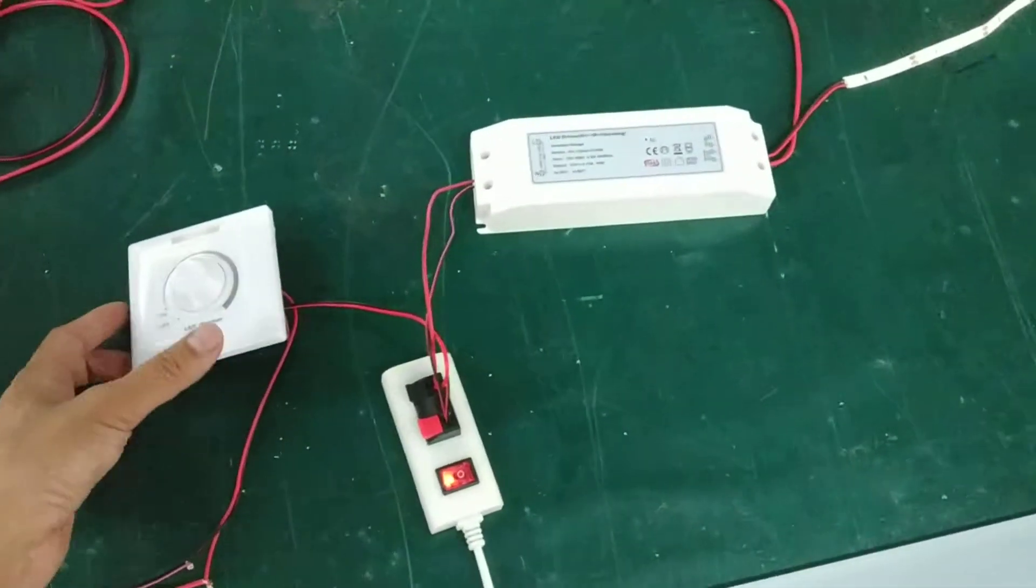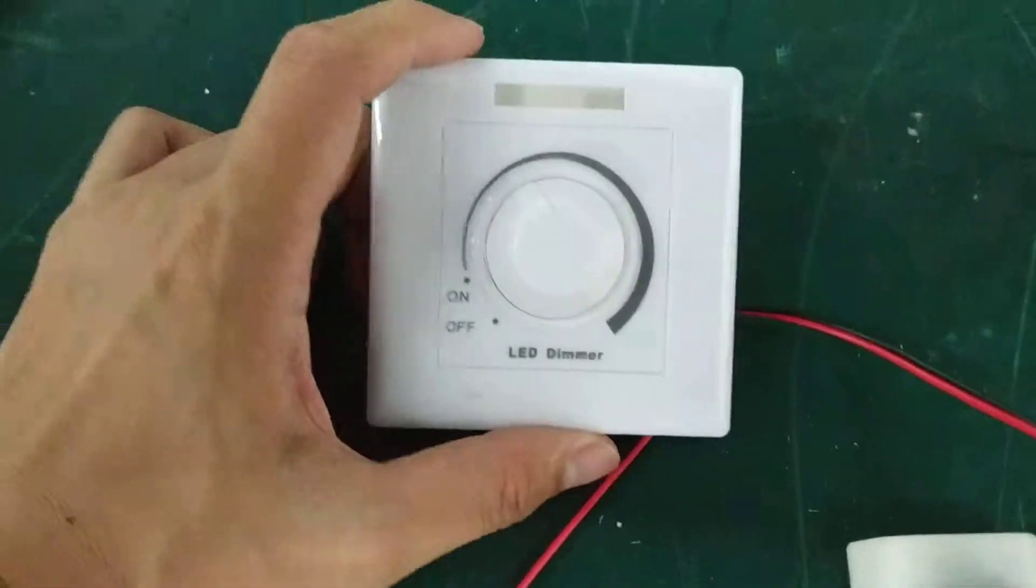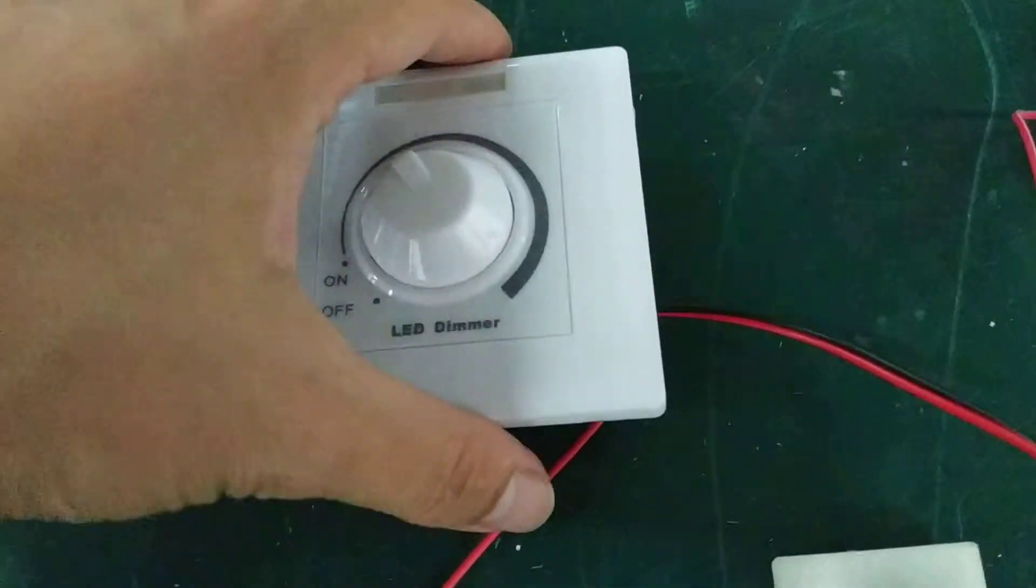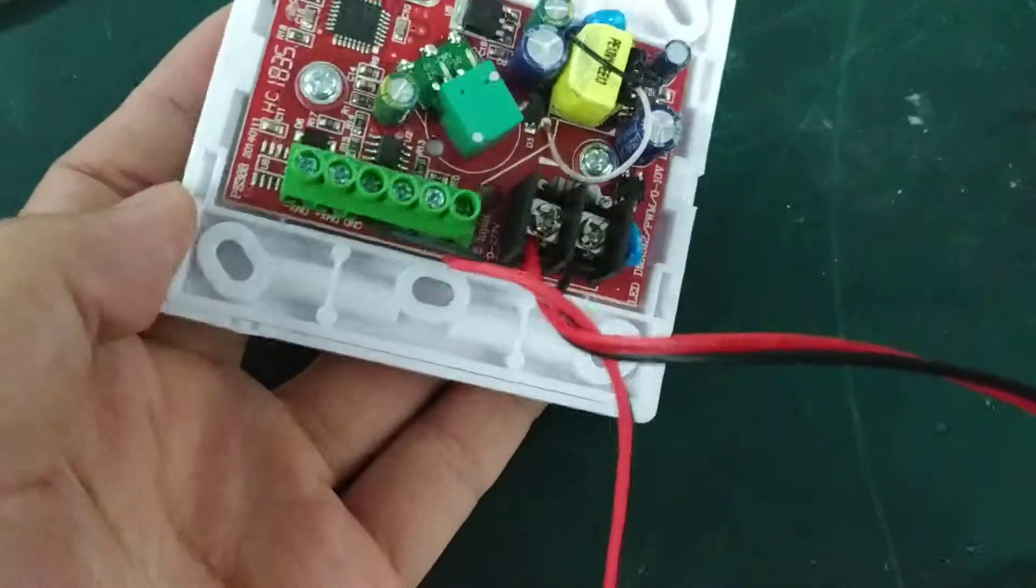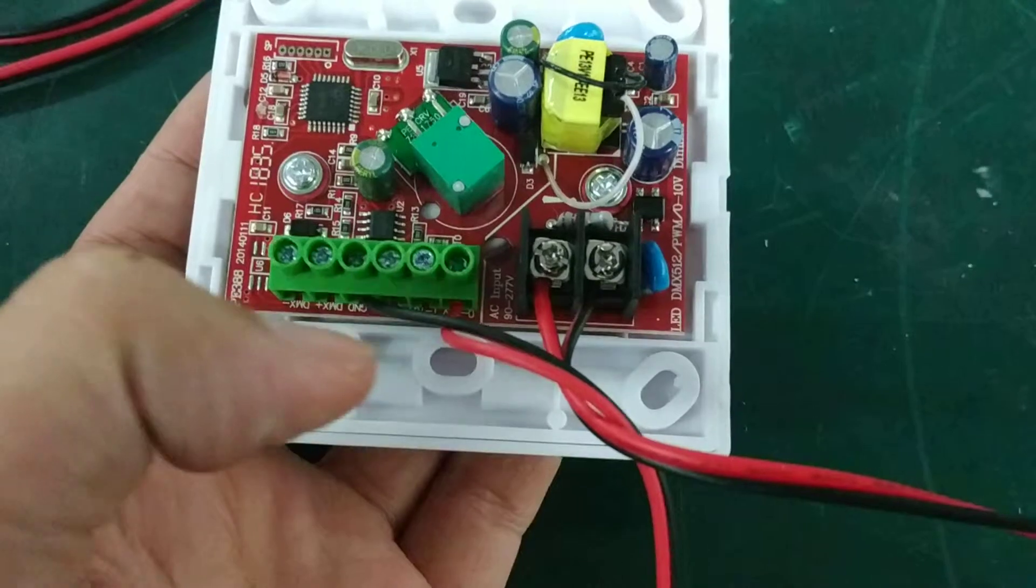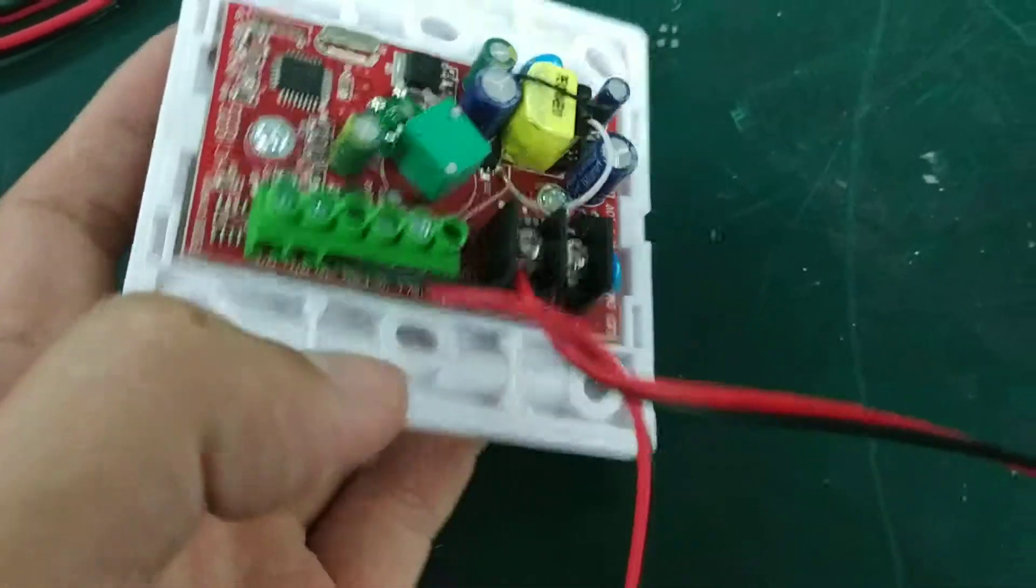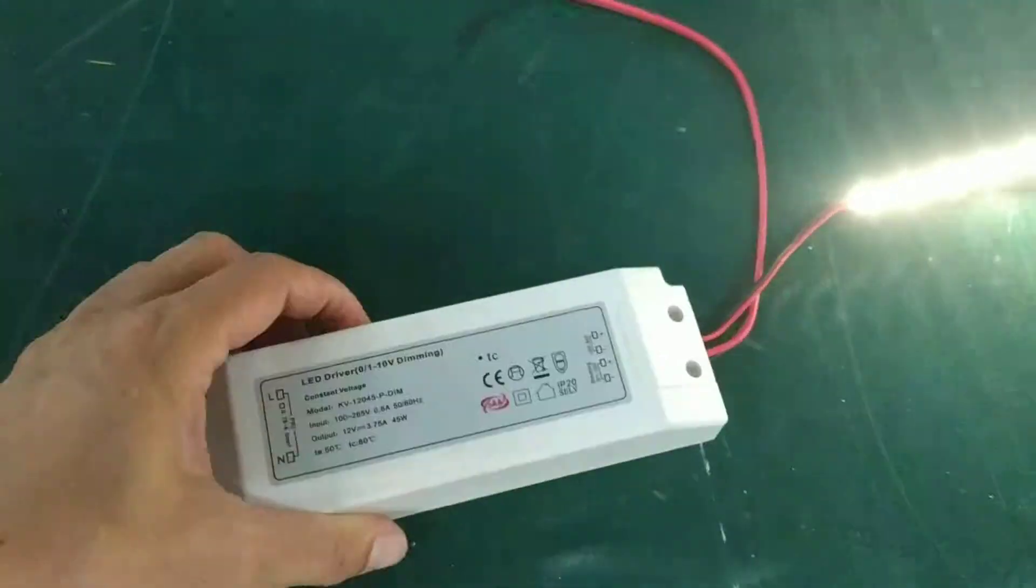I just made a test in my factory. Here is a dimmer 0-10. This is for 200 and this is for the signal. This is the dimmable driver.